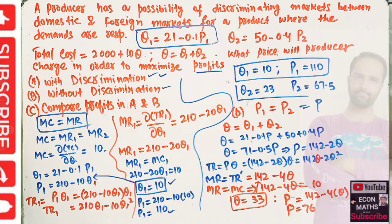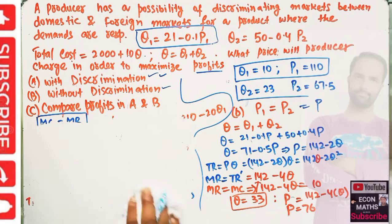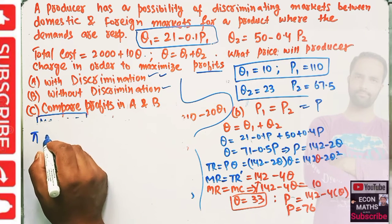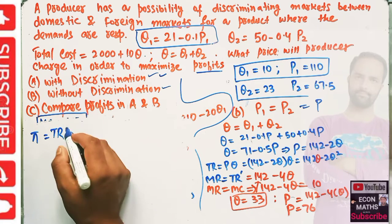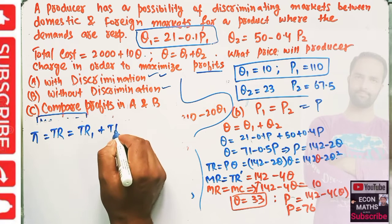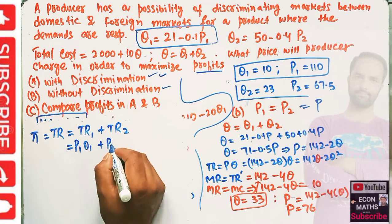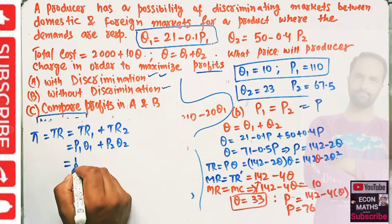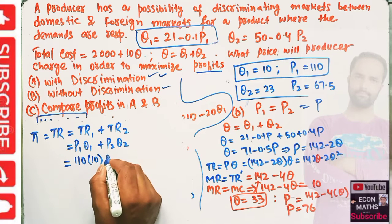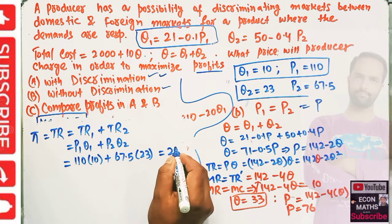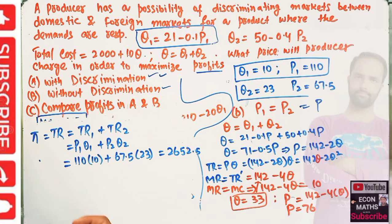Now we compare profits in both situations. Profit with discrimination equals total revenue minus total cost. Total revenue with discrimination equals TR1 + TR2 = P1Q1 + P2Q2 = (110)(10) + (67.5)(23).